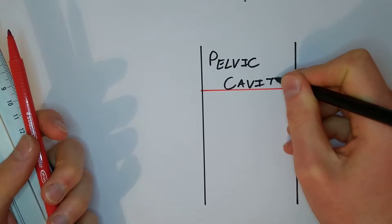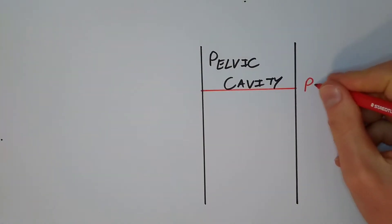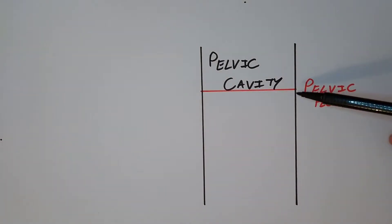Now imagine this is the pelvic cavity. Its lowermost boundary is called the pelvic floor, made of course of the levator ani and coccygeus muscles.